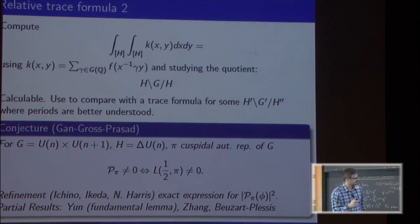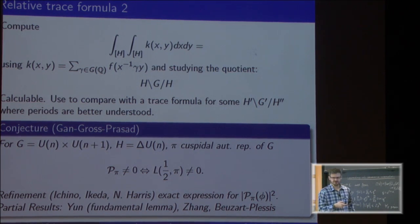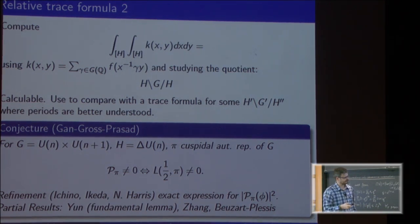The conjecture roughly says that the periods will not vanish if and only if the central value of the L function doesn't vanish. This is the base change L function. Even existence of it wasn't really known until recently, thanks to work of Arthur, Ngô Bảo Châu, and Mok.